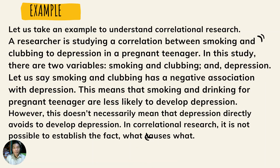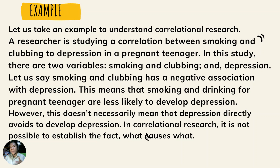Let's take an example to understand correlational research. A researcher is studying the correlation between smoking and clubbing and depression in a pregnant teenager. In this study, there are two variables: smoking and clubbing, and depression. If smoking and clubbing has a negative association with depression, this means those behaviors are less likely to develop depression. However, this doesn't necessarily mean that depression is directly avoided. In correlational research, it is not possible to establish the fact of what causes what.